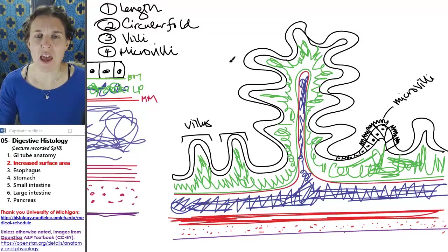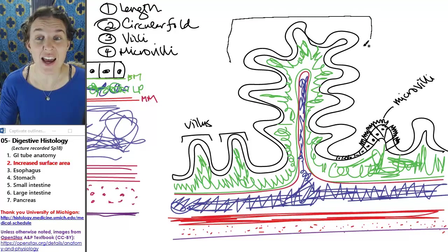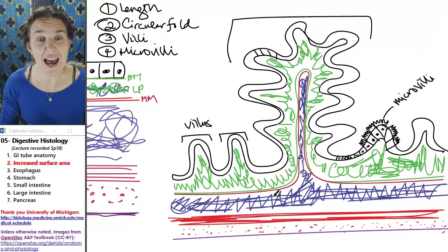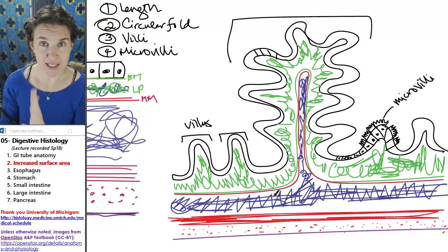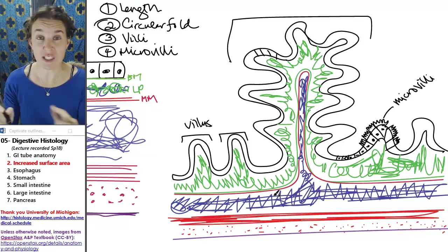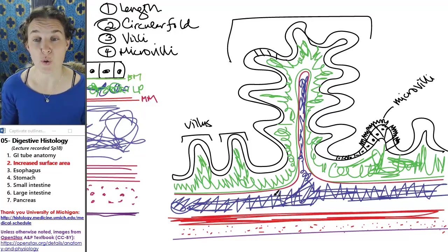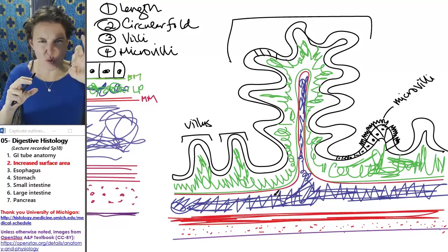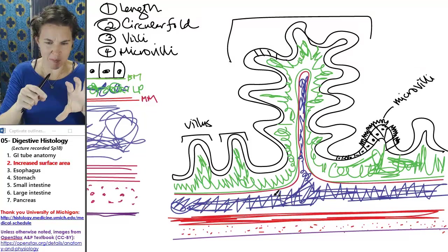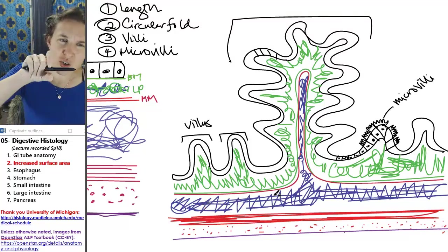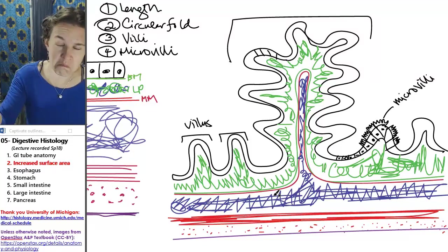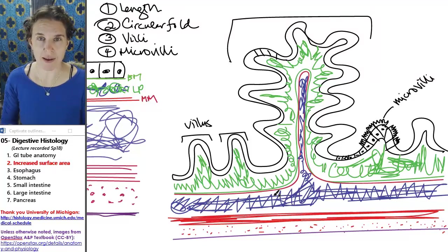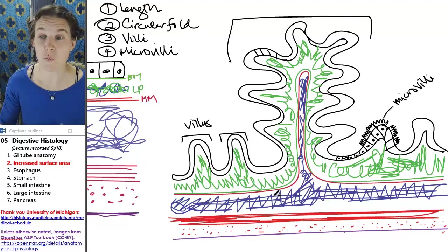What's this third thing? This third thing, it does have microvilli, it does have villi. This is my circular fold. Circular folds have submucosa inside of them. If you don't see submucosa, you're looking at a villus, you're not looking at a circular fold. Circular folds are actual folding in, like pinching down of the entire tube all the way around. So the tube narrows. But as the tube narrows, the surface area increases, which is the point.